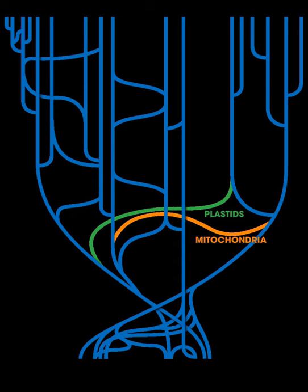Agrobacterium, a pathogenic bacterium that causes cells to proliferate as crown galls and proliferating roots, is an example of a bacterium that can transfer genes to plants, and this plays an important role in plant evolution.